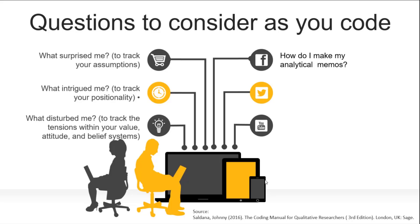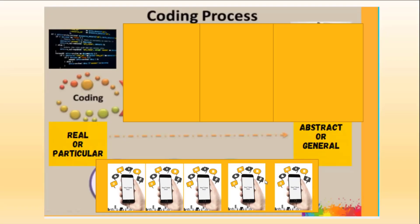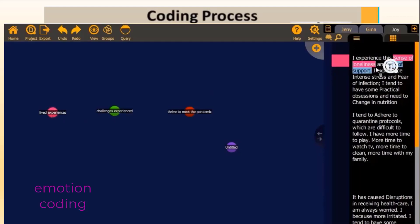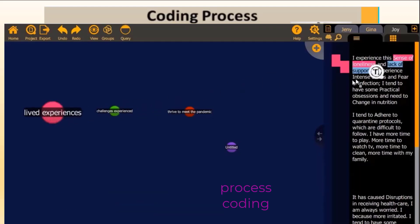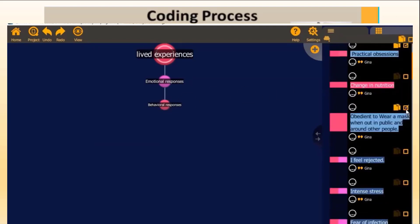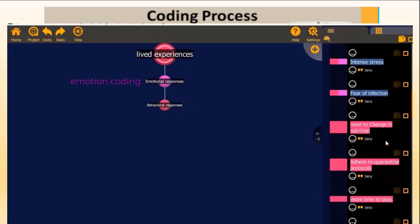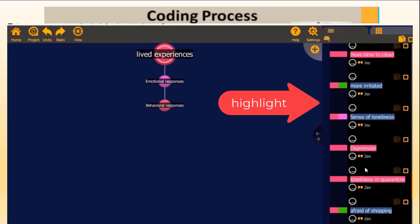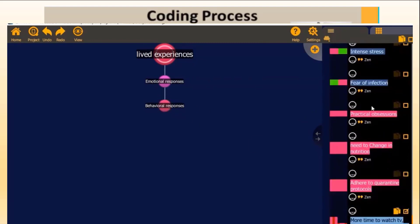To process your coding more efficiently, we simply take note of the following. The flow of the coding process goes from real or particular events to abstract or general. During the first cycle of coding, we must do the descriptive coding, the most common coding, emotion coding, narrative coding, or process coding. Just like in our previous video on the use of Quirkos software, I did two types of coding: the descriptive coding and the emotion coding. My first step was to highlight specific texts or phrases and drag those text phrases to their appropriate balloons.